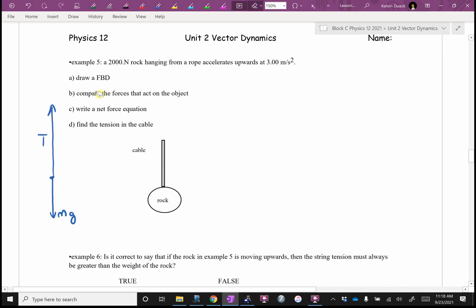So A says, draw a free body diagram. Check. B says, compare the forces that act on the object. We did that with our arrow lengths. Check. C says, write a net force equation. Which force is winning? Which force is losing? What's that going to equal? What does winner minus loser always equal? MA.